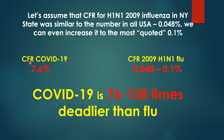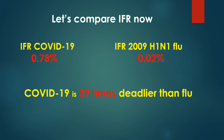Let's compare now IFRs for COVID and flu. As we calculated earlier, IFR for COVID-19 for New York State is 0.78%. The IFR for 2009 H1N1 flu, according to the paper I showed you, was 0.02%. So if we divide 0.78% by 0.02%, it gives us the number 39, which means that comparing IFRs, COVID-19 is at least close to 40 times deadlier than flu.